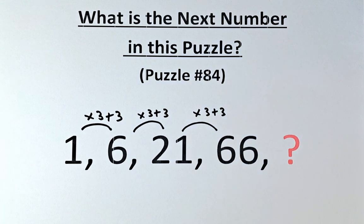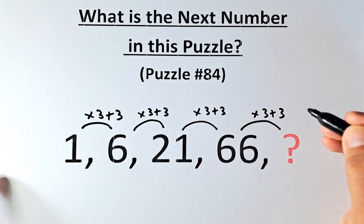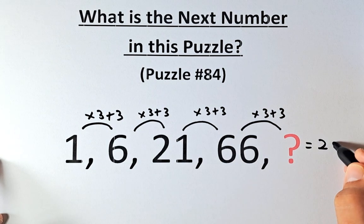And last but not least, from 66 to the question mark, we do the same thing: multiply by 3 and plus 3. 66 multiplied by 3 gives 198, and 198 plus 3, the answer is 201.